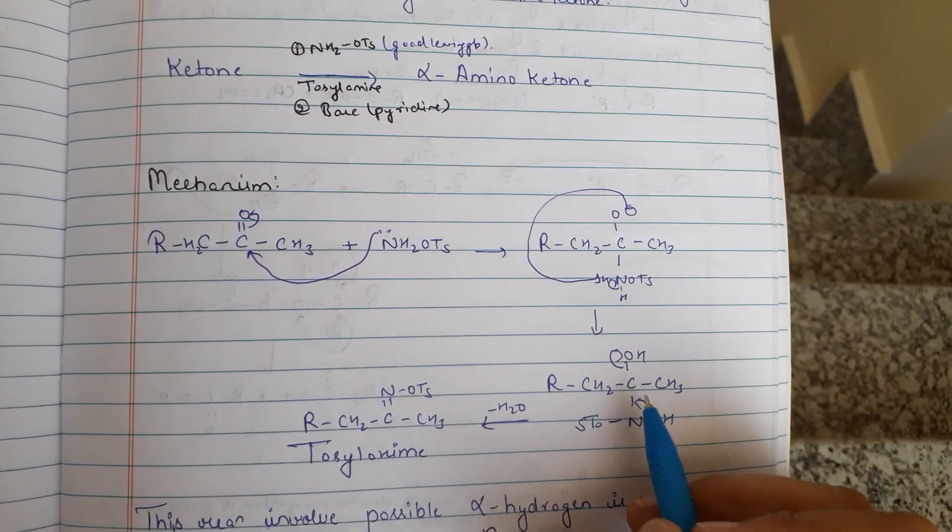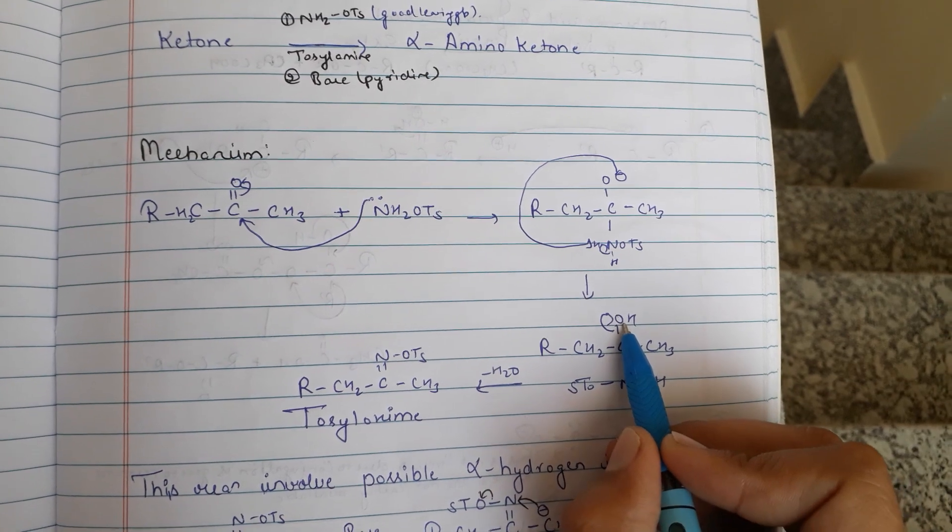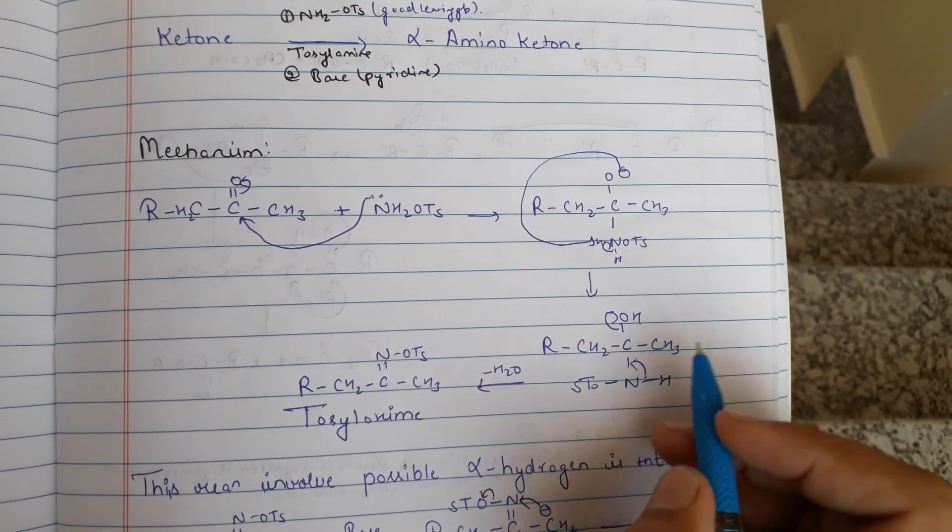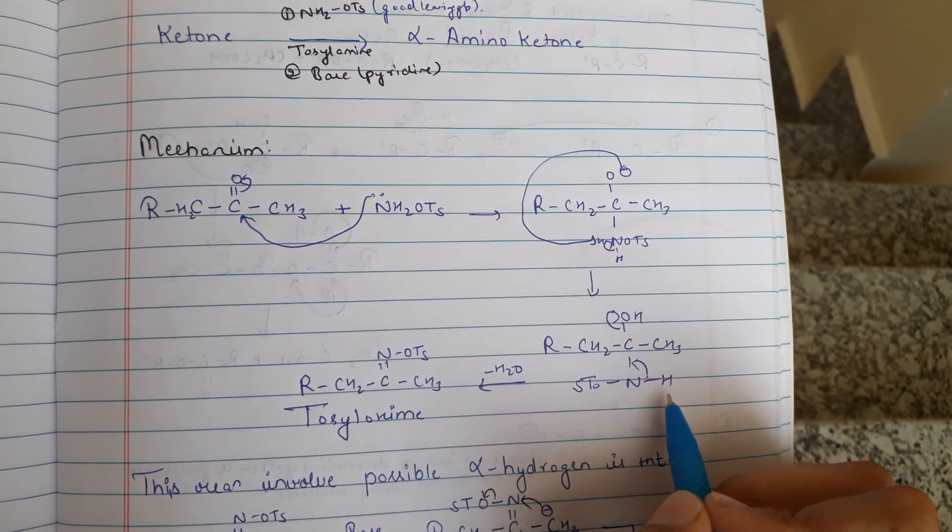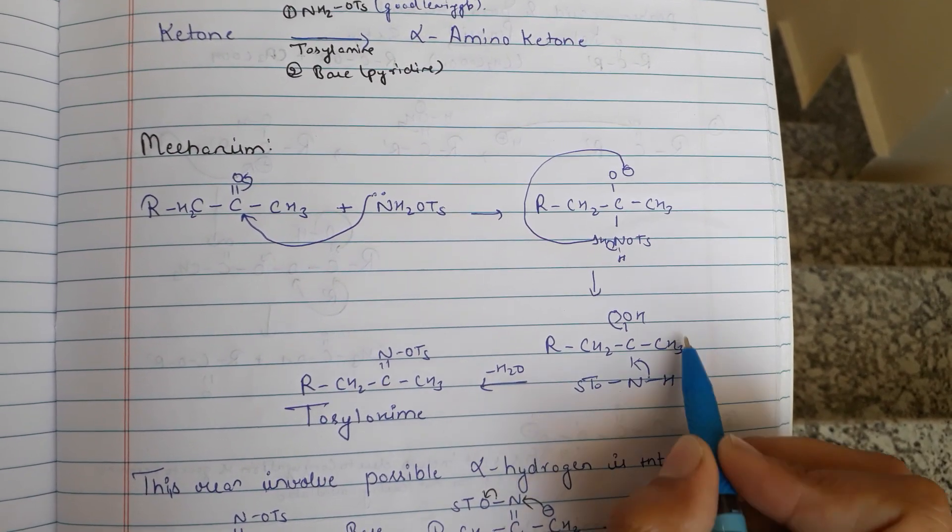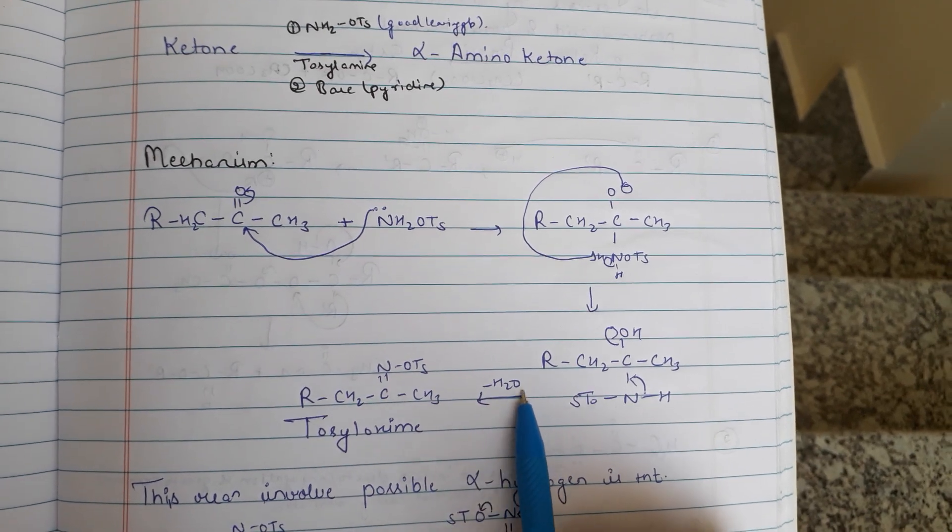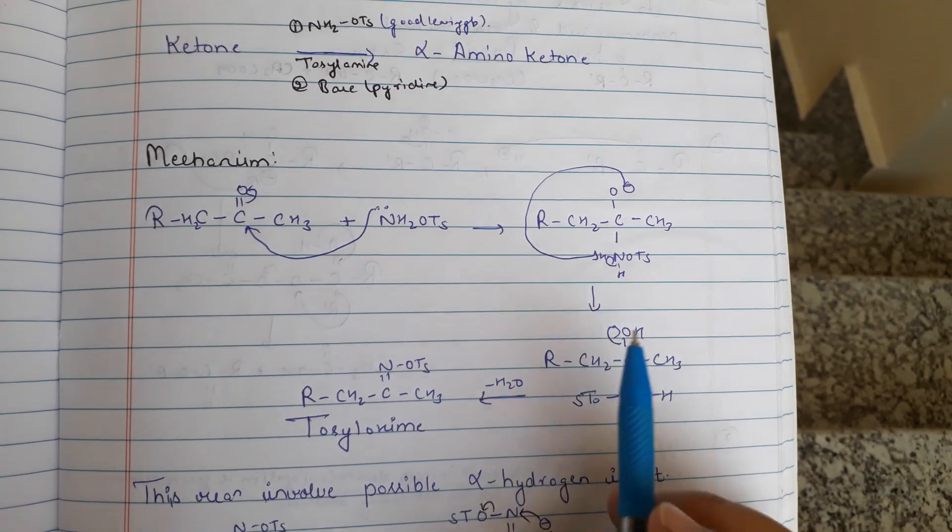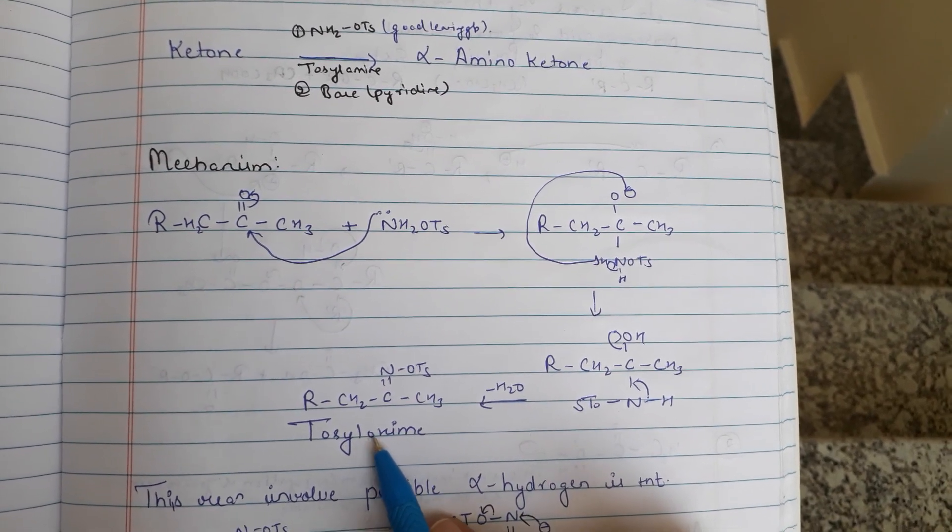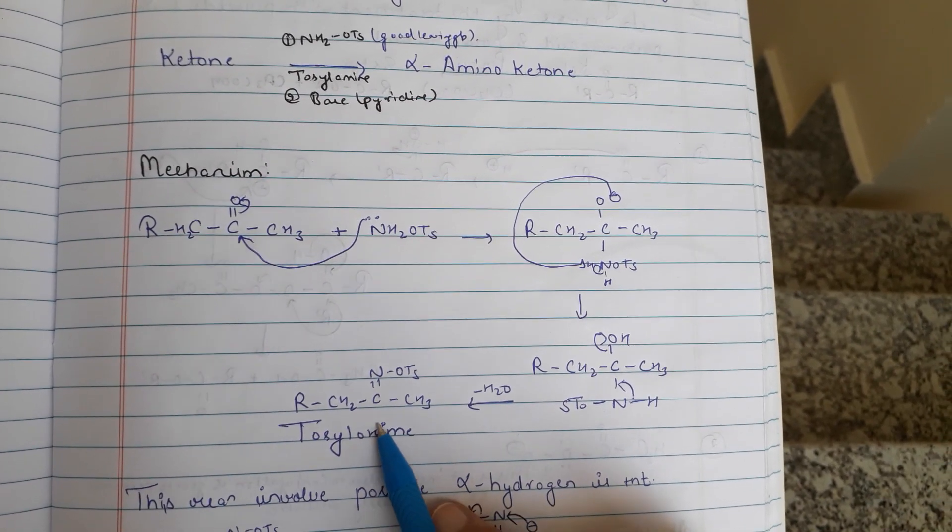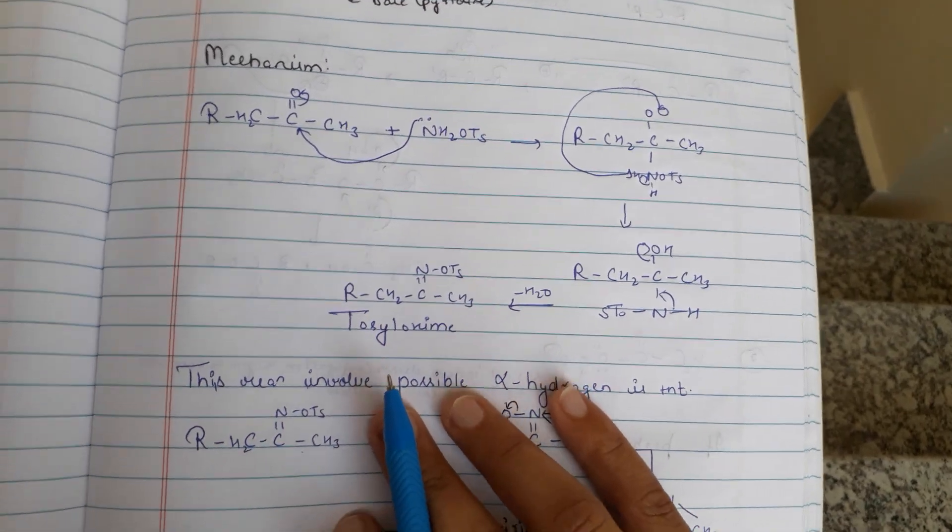Then it will be like OH here and there is NHOTs. Now this will shift here and that will be removed, and that H will shift here with a loss of H2O. Then there's formation of a double bond with NOTs, which is tosyl oxime. There's formation of tosyl oxime.